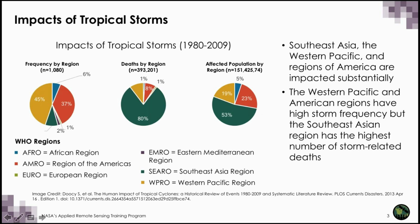Tropical storms are low pressure systems that form over warm tropical oceans. They are characterized by having high sustained winds, usually over 60 km per hour, and clouds and rain extending hundreds of kilometers from their center. Tropical storms are known by different names — in the Atlantic and Northeast Oceans they're known as hurricanes, in the Indian Ocean as cyclones, and in the Northwest Pacific Ocean as typhoons. Their intensity can vary from a tropical depression, to a tropical storm, to a hurricane, typhoon, or cyclone, to a super hurricane or super typhoon.